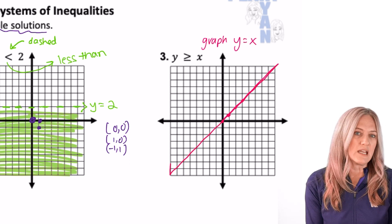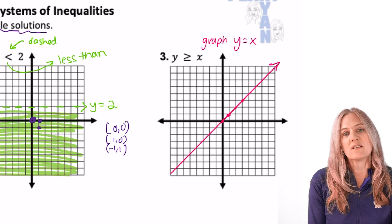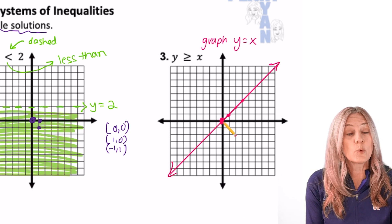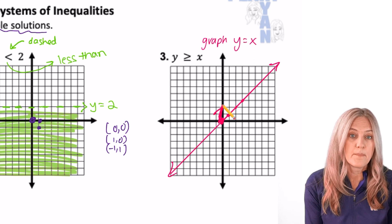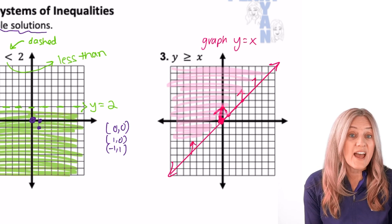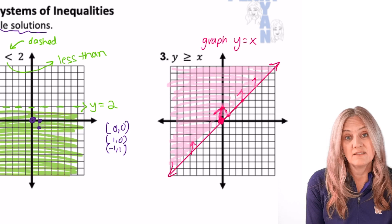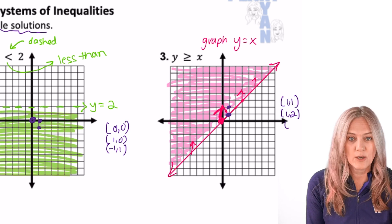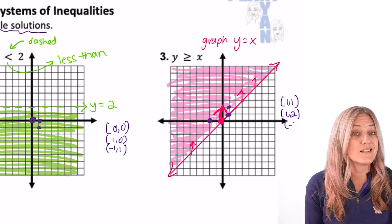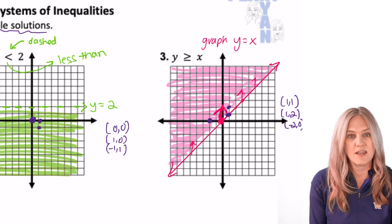Now what about shading? Put your pen or pencil on the y-intercept. It says greater than. So we're going to draw an arrow up. This means we shade everything above that line. Next, pick three points that are in the solution set for this two-variable inequality. Pick one that is on the line because it is equal to.